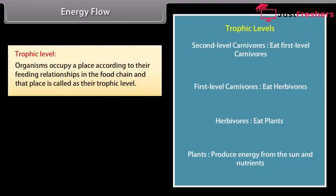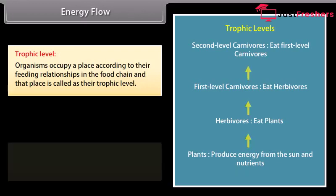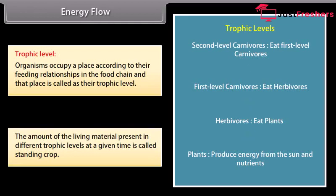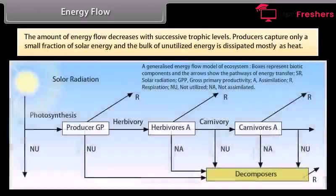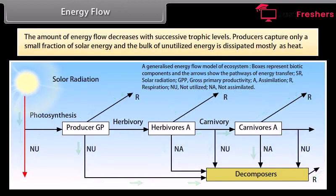Energy flow — trophic level. Organisms occupy a place according to their feeding relationships in the food chain, and that place is called their trophic level. Plants that produce energy from the sun are the first trophic level. Herbivores are at the second trophic level. First-level carnivores are at the third level. Second-level carnivores are at the fourth level. The amount of living material present at different trophic levels at a given time is called standing crop. The amount of energy flow decreases with successive trophic levels.